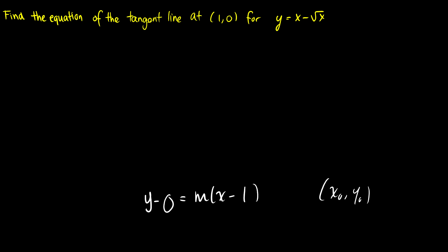What we need to find is the slope, m. We find the slope by taking the derivative of y equals x minus the square root of x. So y prime is going to be the derivative of x, which is 1, minus the derivative of the square root of x, which is x to the 1/2. That gives us 1 over 2 times the square root of x.